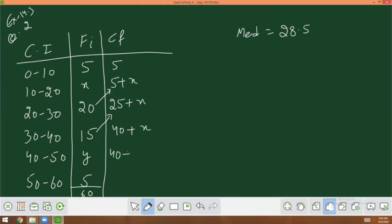40 plus x plus y. Y is a different variable, it will not add. So it's 45 plus x plus y. Clear? This is the CF.